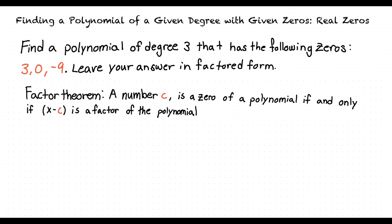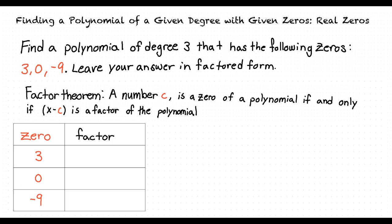Using this theorem, we can evaluate the different factors of our polynomial. First, using the zero of 3, we find that the corresponding factor for it is x minus 3.